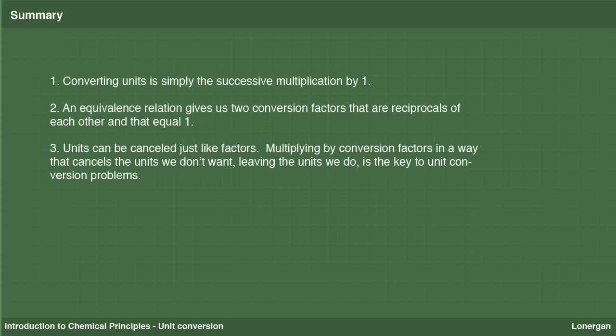To summarize: unit conversion is simply the successive multiplication by 1. An equivalence between two quantities can give us two ratios or conversion factors that are reciprocals of one another and that equal 1. Units can be canceled just like factors. So multiplying by conversion factors in a way that cancels the units we don't want and leaves us with those we do is the key to doing unit conversion problems.